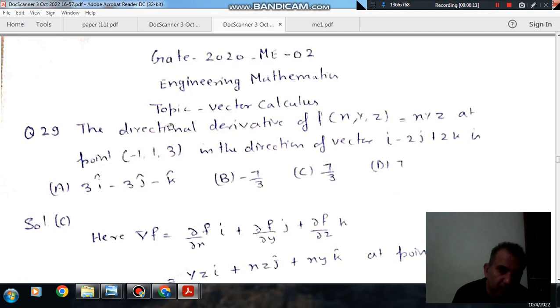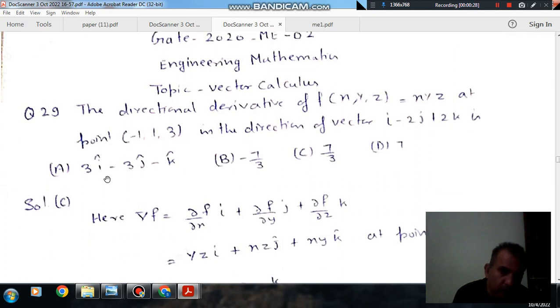Question number 29 from Gate 2020 ME-02: The directional derivative of function f(x,y,z) = xyz at point (-1, 1, 3) in the direction of vector i - 2j + 2k is: option A: 3i - 3j - k, option B: -7/3, option C: 7/3, and option D: 7.